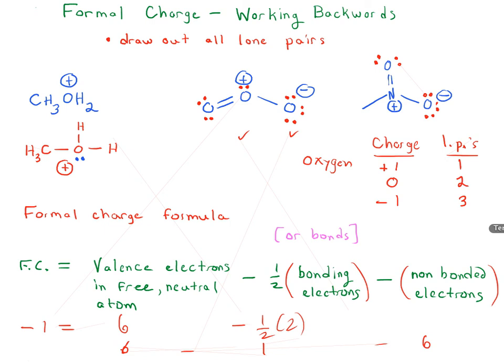So if you're given a number of lone pairs but not given the charge, you should be able to figure that out fairly readily based on the number of bonds to oxygen, then fill out the number of electrons to give yourself a full octet. That's how the formal charge on oxygen and the number of lone pairs on oxygen are related.